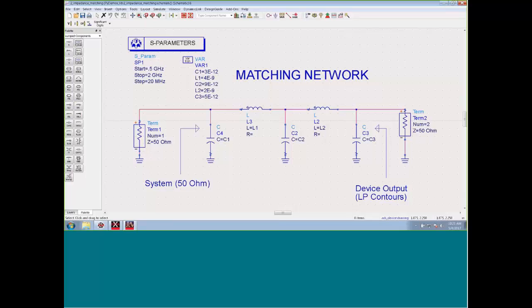I'm going to start with the matching network. In this example, it's a very simple matching network. It's just a set of L's and C's. What it's going to do is transform my system impedance on this side, on port 1, to my device output. This is the output of my transistor. This is where I generated those load pool contours. The way that this network is going to work, it's going to move the impedance from 50 ohms to a lower impedance somewhere on the Smith chart.